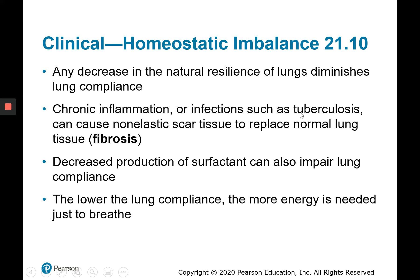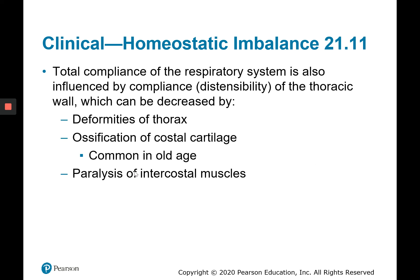For example, tuberculosis is an infection that can cause fibrosis of lung tissue, or non-elastic scar tissue, reducing lung compliance. Decreased production of surfactant can also impair lung compliance. Any decrease in lung compliance will require the use of accessory muscles to breathe, making it harder. Regarding the thoracic cage, a deformity such as a broken rib that didn't heal correctly, or ossification of the costal cartilage connecting the ribs to the sternum, would reduce movement of the thoracic cage.